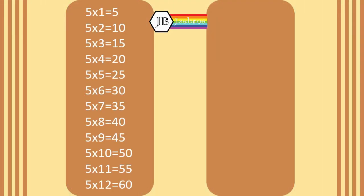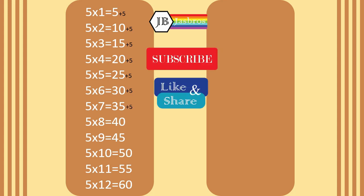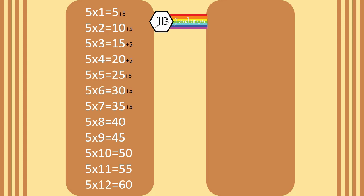I will teach you the easiest way to remember this table by adding five to each number. Five ones is five. Five plus five equals ten. Ten plus five equals fifteen. Fifteen plus five equals twenty. Twenty plus five equals twenty-five. Twenty-five plus five equals thirty. Thirty plus five equals thirty-five. Thirty-five plus five equals forty.